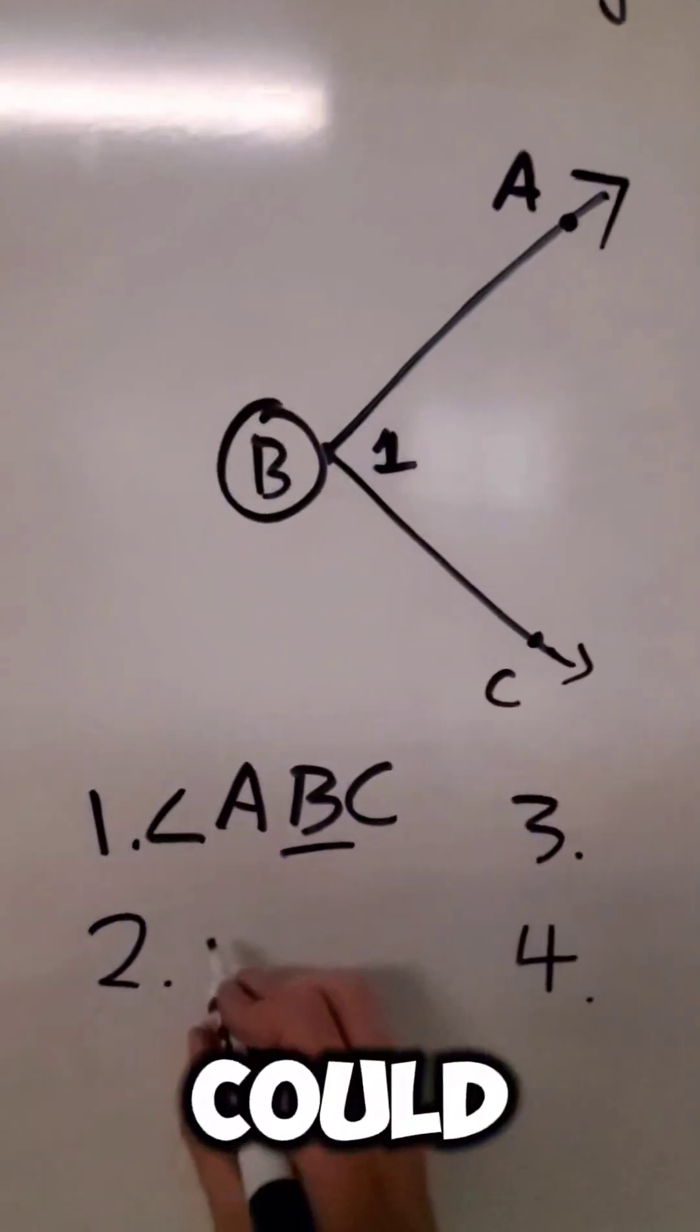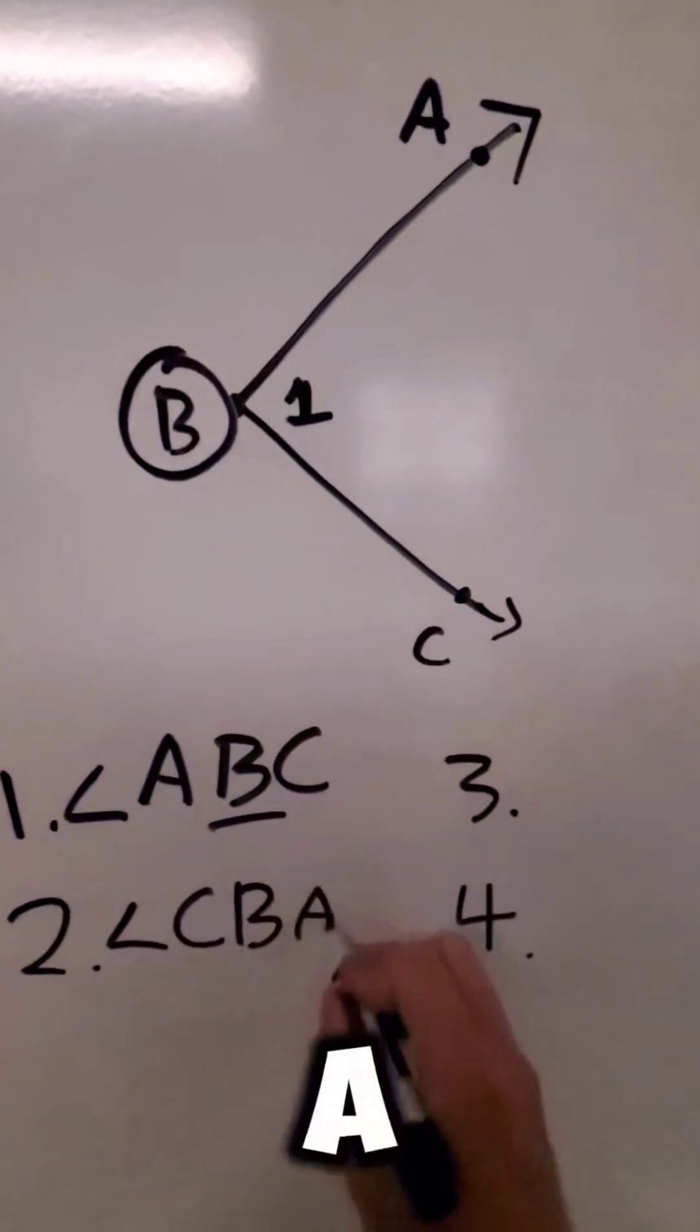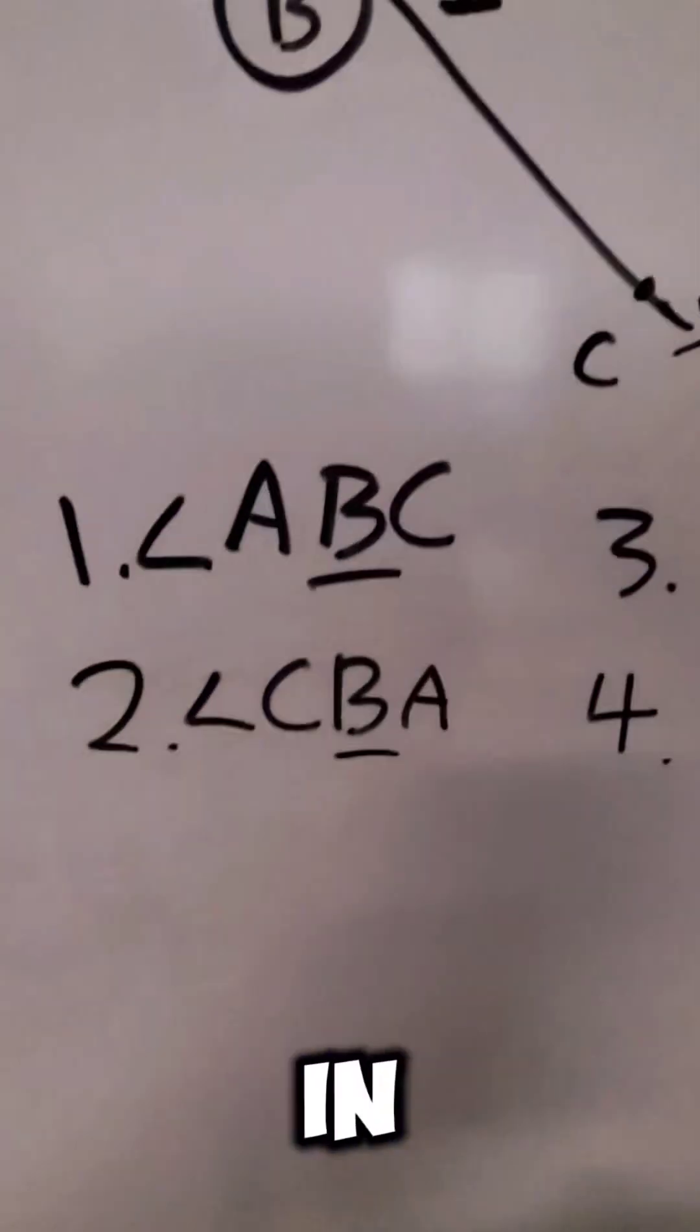We could also go backwards. We could name this angle C, B, A. Notice how that B is in the center again.